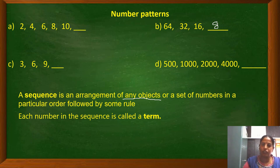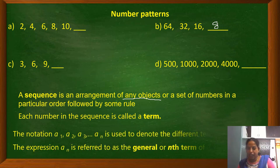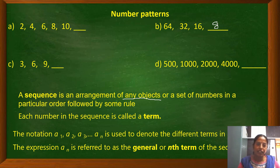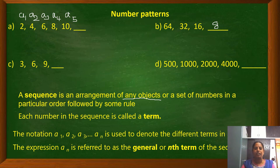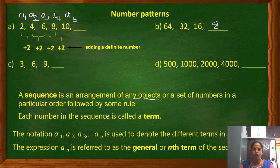The term 2 is called the first term or initial term of a sequence, denoted by a1. The next one is a2, then a3. If we know the last term, we represent it by an. For example, in the sequence 3, 6, 9..., 3 is the first term, 6 is the second term, 9 is the third term. To get the next number in the staircase example, we are adding plus 2 each time.